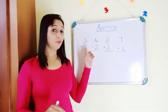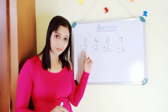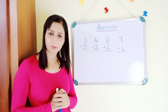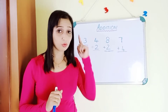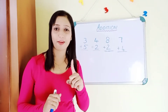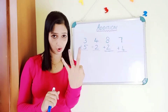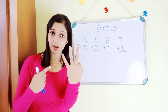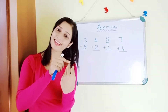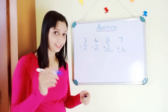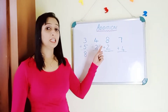Let's go to the first example: three plus five. Which is the biggest number — three or five? Five. So you take five in your mind and three in your hand. Count forward after five: six, seven, eight. So the answer is eight.